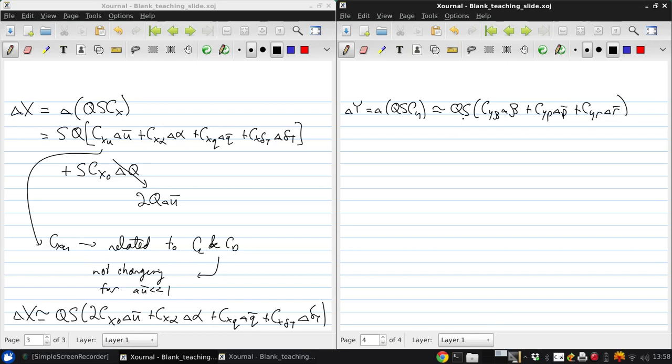QS times Cy beta delta beta plus Cy p delta p bar plus Cy r delta r bar, because Cy naught is zero since our trim state assumes no side slip. And then similarly delta Z, which is delta QS Cz, will be approximately QS times 2 Cz naught delta u bar plus Cz alpha delta alpha plus Cz q delta q bar plus Cz delta f delta delta f plus one term that didn't appear in those matrices that's included here for completeness: Cz delta e delta delta elevator.